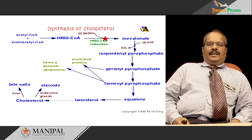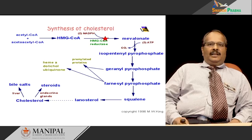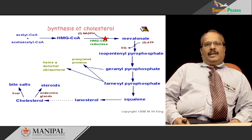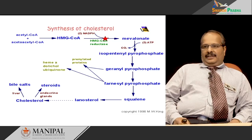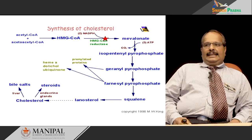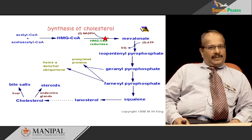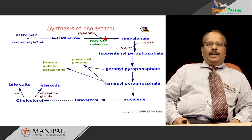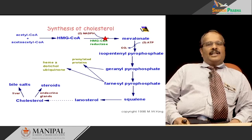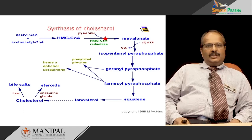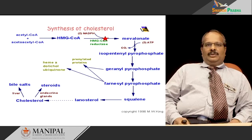HMG-CoA reductase is also controlled by several hormones. Insulin and thyroid hormones upregulate the gene of HMG-CoA reductase, activating the enzyme and in turn activating cholesterol biosynthesis. Whereas glucagon and cortisol downregulate HMG-CoA reductase, thereby inhibiting cholesterol biosynthesis.